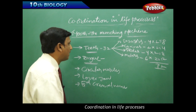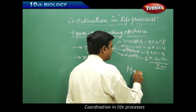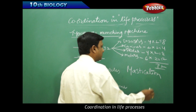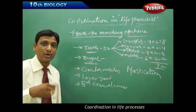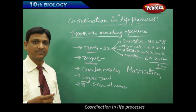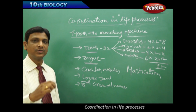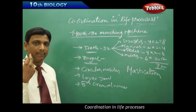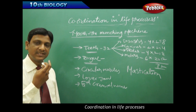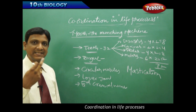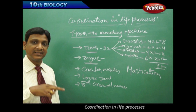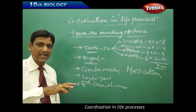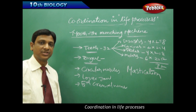We call this chewing process mastication. Many things are coordinated to carry out mastication: the bones, including the teeth and the bone in the lower jaw; the fifth cranial nerve; circular muscles in the mouth; lips; tongue muscles; and tongue nerves. All of these are coordinated together to bring about the process of mastication successfully.